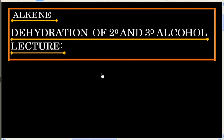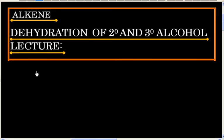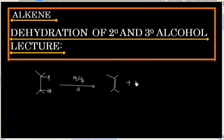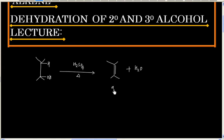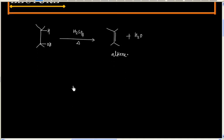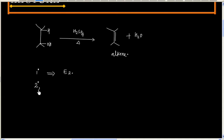In this lecture we will discuss dehydration of secondary and tertiary alcohols. When alcohol is heated in the presence of acid it gets dehydrated to give an alkene. If the alcohol is primary, the mechanism is E2, and if the alcohol is secondary or tertiary, the mechanism is E1 — that is unimolecular elimination.